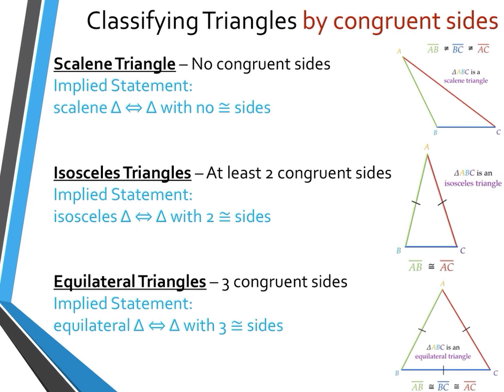First, some vocabulary. We want to use different methods to classify triangles. One method is to classify triangles by congruent sides. The first type is scalene, which means there are no congruent sides. Looking at triangle ABC, no side is the same length. We can write a statement: segment AB is not congruent to segment BC, which is not congruent to segment AC.